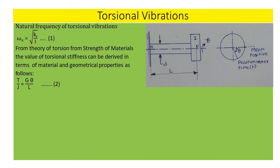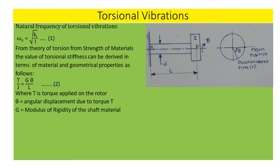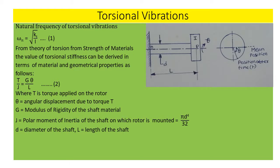From the theory of torsion: T/J = G·theta/L — this is Equation 2 — where T is the torque applied on the rotor, theta is the angular displacement due to torque T, G is the modulus of rigidity of the shaft material, J is the polar moment of inertia of the shaft equal to π·D⁴/32, D is the diameter of the shaft, and L is the length of the shaft. Torsional stiffness KT = T/theta. From Equation 2, KT = GJ/L.